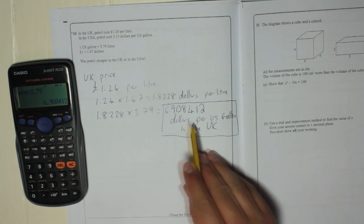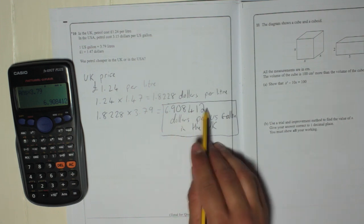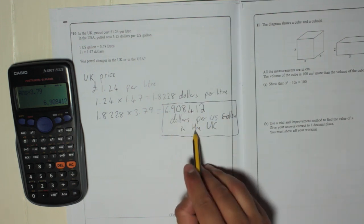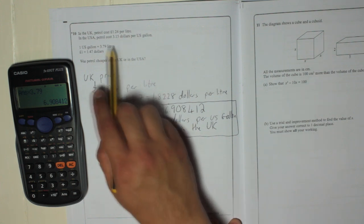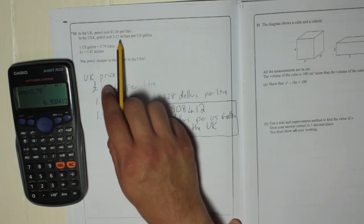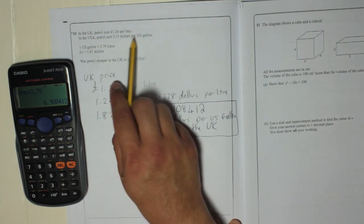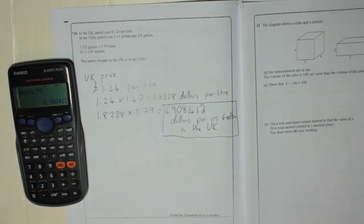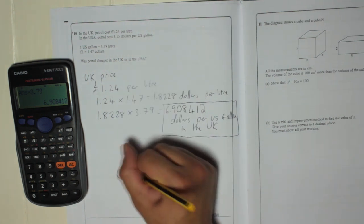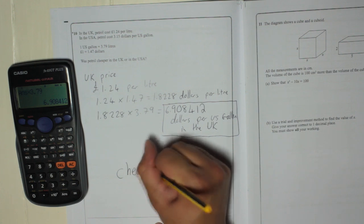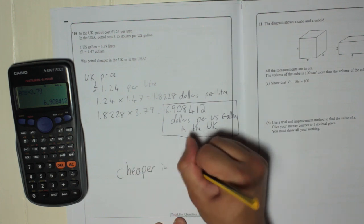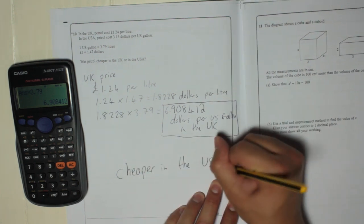So that's how much it is in the UK. 6.908412 dollars per US gallon in the UK. Whereas in USA, it is 3.15 dollars per US gallon. Therefore, it is cheaper in the USA. No real surprise there.